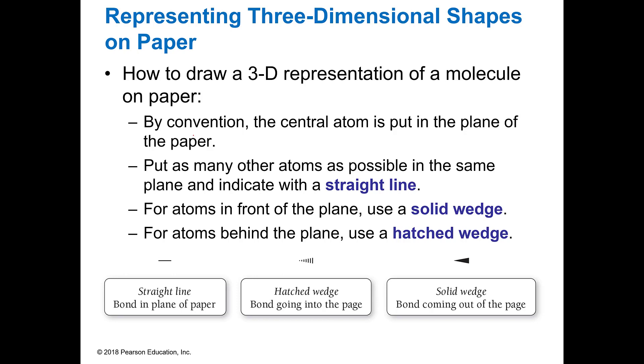By convention, you're going to have the central atom in the plane of the paper. Then you're going to put as many atoms as possible in the same plane and indicate those with a straight line. For atoms sticking out in front of the page, you use a solid wedge. For any atoms that are behind the plane, you use the hatched wedge.